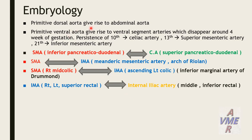The primitive dorsal aorta gives rise to the abdominal aorta, while the primitive ventral aorta gives rise to ventral segmental arteries which disappear around the fourth week of gestation. The 10th branch gives the celiac artery, the 13th branch gives the superior mesenteric artery, and the 21st branch gives the inferior mesenteric artery.